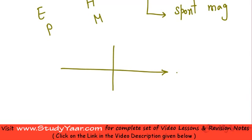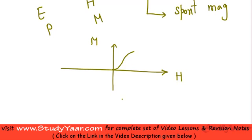If you draw a curve between H, which is your magnetic field, and M, which is your magnetization, you get a hysteresis loop. Initially, when you start, your magnetization increases — first it increases very fast, then relatively slower, and it attains a saturation value.